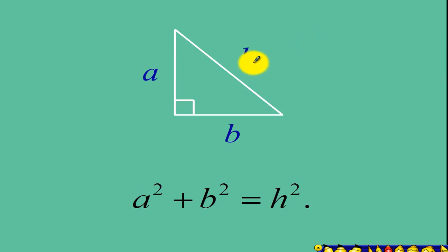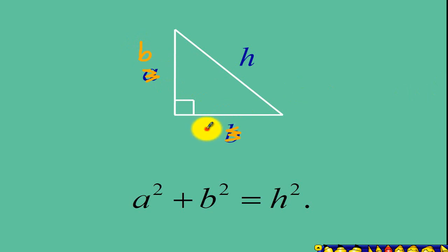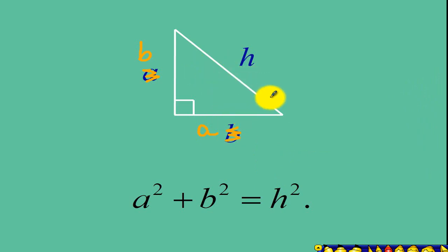Sometimes instead of using C, we use H to denote that this side is our hypotenuse. Remember that the sides containing your right angle will be your legs. In this case, we have leg A and leg B. It is also possible to interchange your label for your legs — we can call this leg B and this one leg A. It will not really matter. As long as you know what are your legs and what is your hypotenuse, you'll be okay for your Pythagorean theorem.